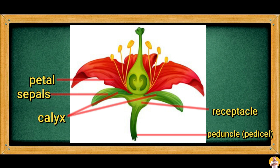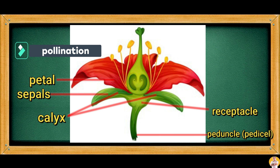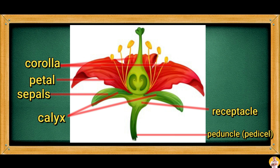The most observable part of the flower, which people normally appreciate, is the petal. Petals normally have different colors depending on the type and species of plant. For instance, gumamela plants produce flowers in varying colors. Petals attract insects for pollination. Some flowers have three petals, while others have five or more. When petals are grouped together, they are called the corolla.